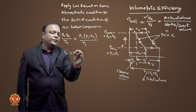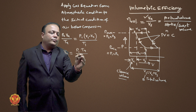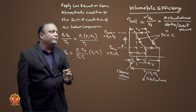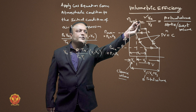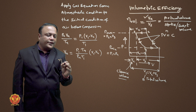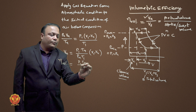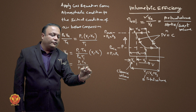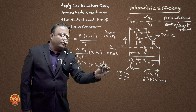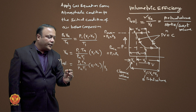So VA equals P1 × TA upon PA × T1, multiplied by (V1 - V4). Substituting VA into the volumetric efficiency formula, the volumetric efficiency becomes: (P1 × TA) / (PA × T1) × (V1 - V4) / VS.